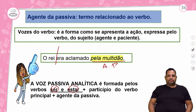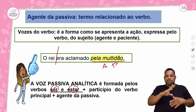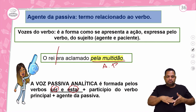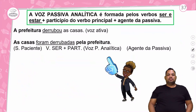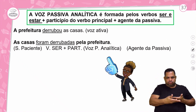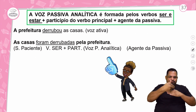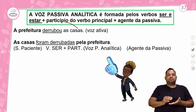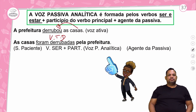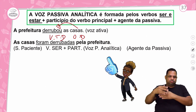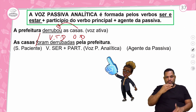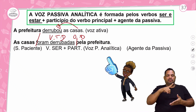Se eu fosse colocar esta oração na voz ativa ficaria assim: 'A multidão aclamara o rei'. Outro exemplo: 'A prefeitura derrubou as casas' — a prefeitura está praticando a ação, então o sujeito é agente. O verbo derrubar é verbo transitivo direto porque 'derrubou o quê? As casas'. As casas é o objeto direto, sem preposição. Na voz passiva: 'As casas foram derrubadas pela prefeitura' — as casas é o sujeito paciente, 'foram derrubadas' é locução verbal, e 'pela prefeitura' é o agente da passiva.